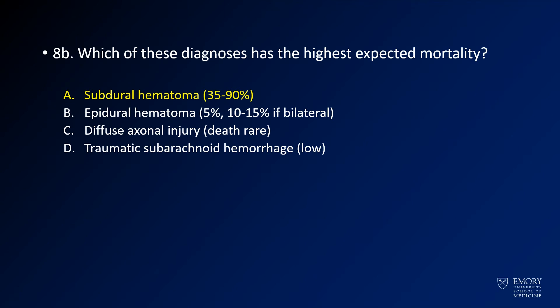The answer to the second question is subdural hematoma has the highest expected mortality. This is partly because patients with subdural hematoma tend to be in much worse shape overall — they tend to be much older and have much less elasticity or potential for recovery. Epidural hematomas are frequently discussed because without surgical intervention they can be fatal; however, they tend to occur in younger patients with trauma and fractures, and overall survival is better. Diffuse axonal injury can be debilitating, but death from it would be rare. Similarly, traumatic subarachnoid hemorrhage — death would actually be rare.